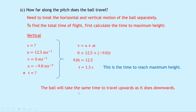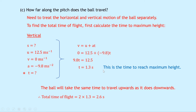Note that 1.3 seconds is the time to reach maximum height. The ball takes the same time to travel upwards as it does downwards, so the total time of flight is 2 times 1.3 seconds, which gives 2.6 seconds. Now that we have the total time of flight for the vertical motion, we know it's the same for the horizontal motion.